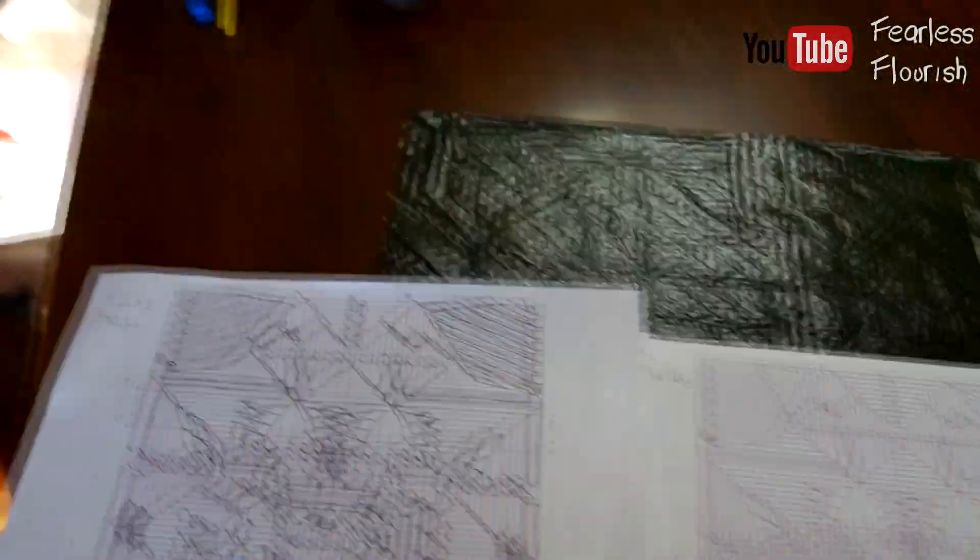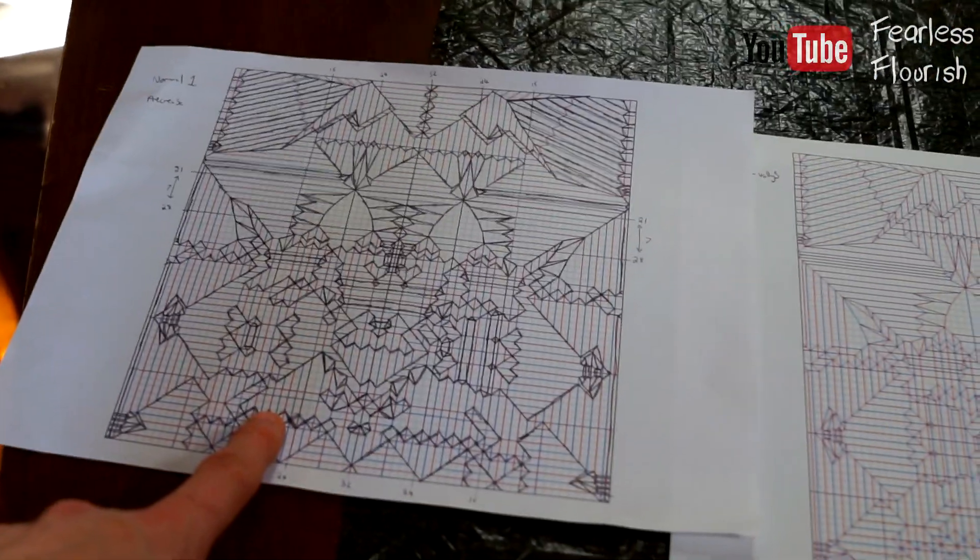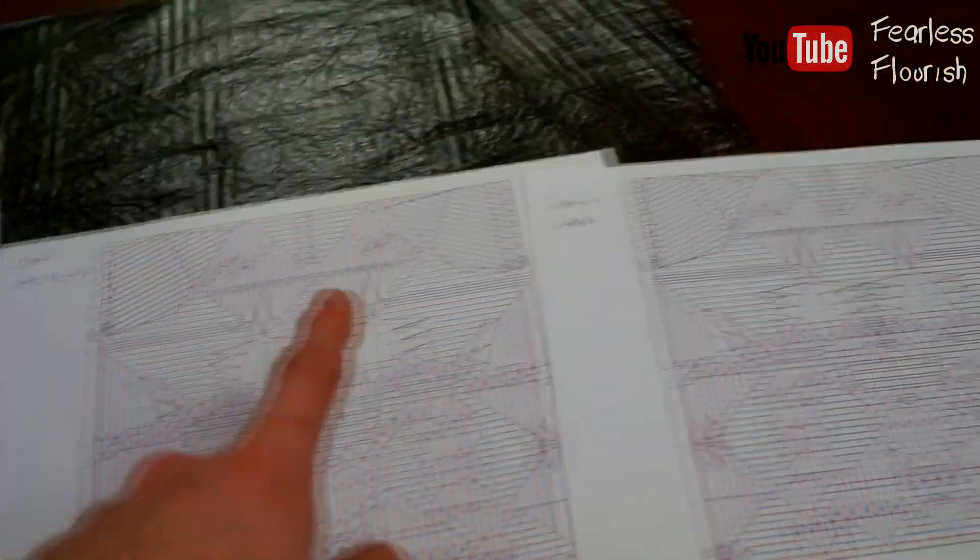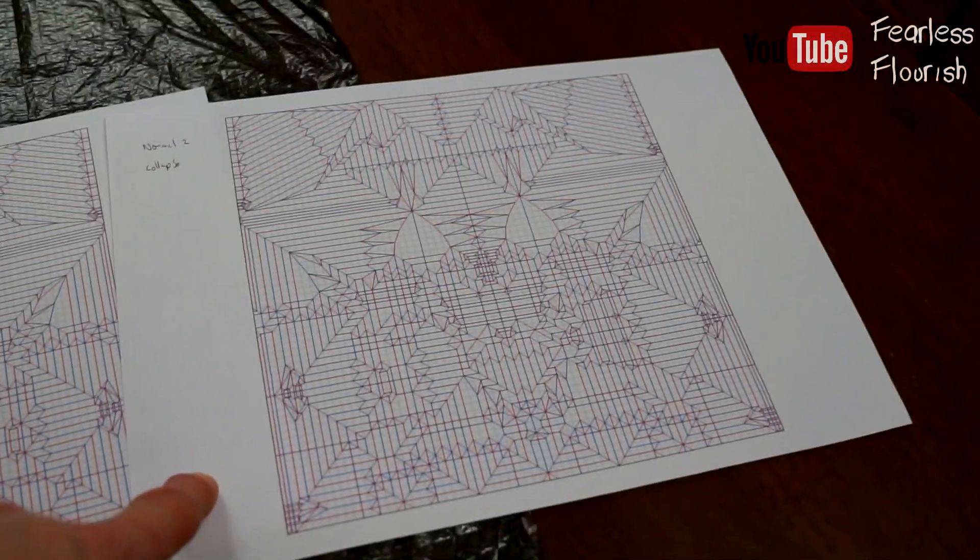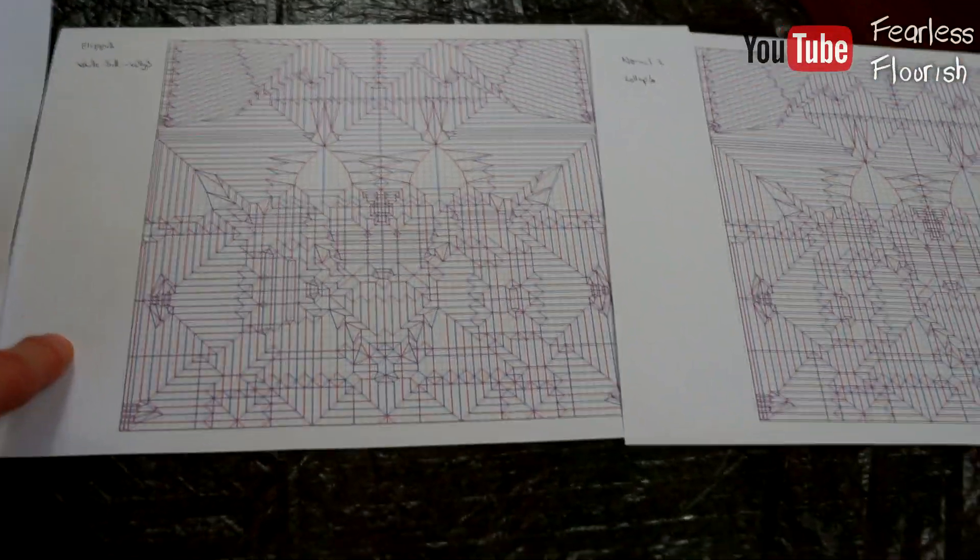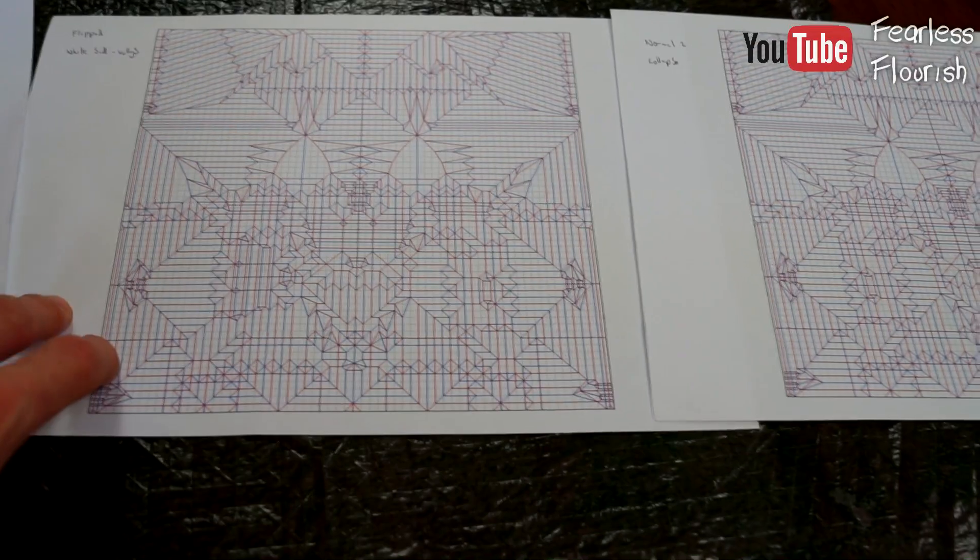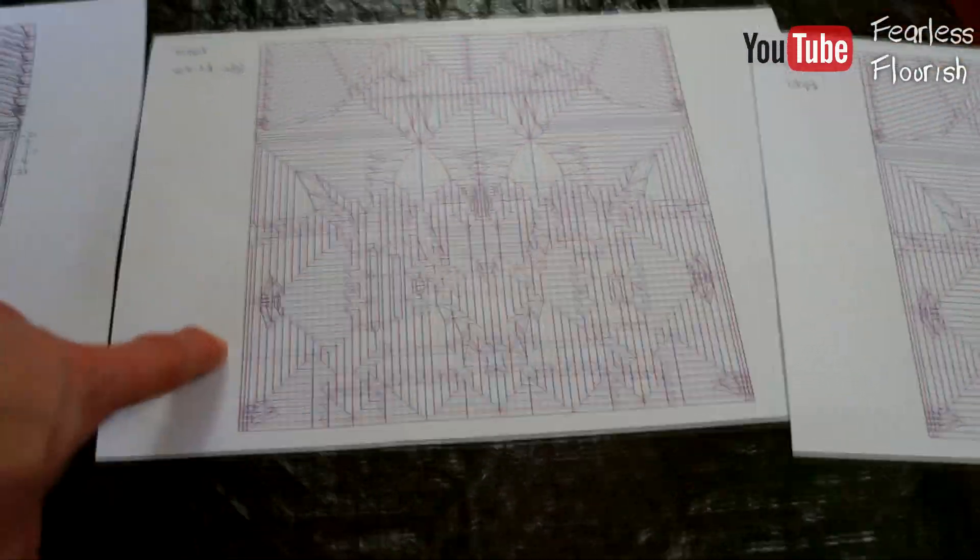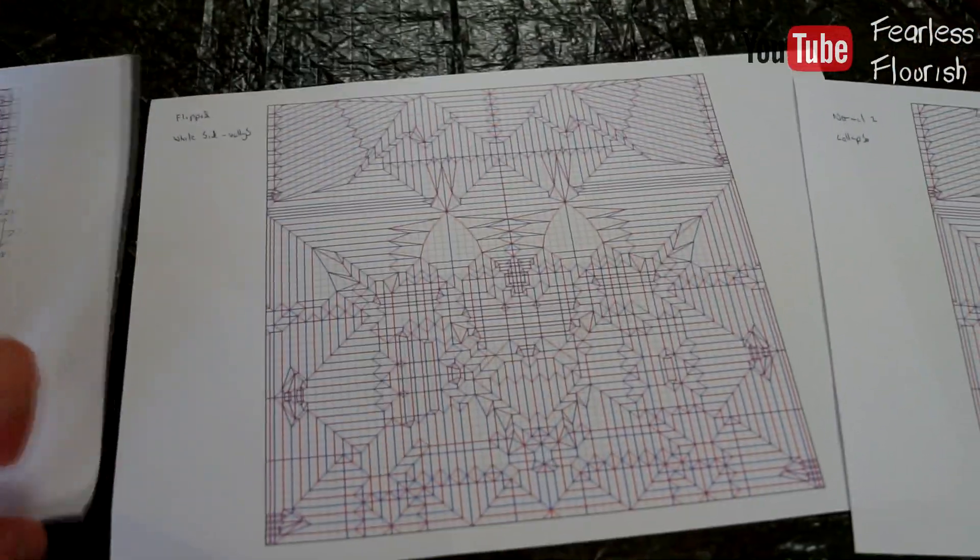So just to quickly recap the video. If you want to do this, print off three of the crease patterns. The first one you would pre-crease as normal. The second one you would use to collapse as normal. And then the third one is flipped. Now if you can't flip the crease pattern in an image program, let me know in the comments. I can do it for you. I can send it to you if that helps.